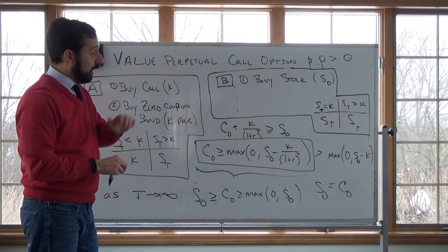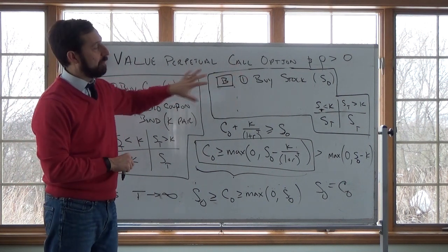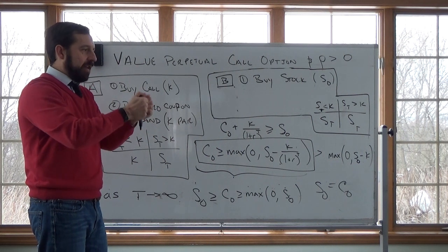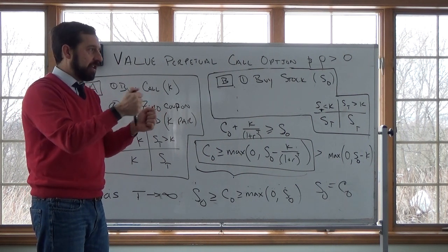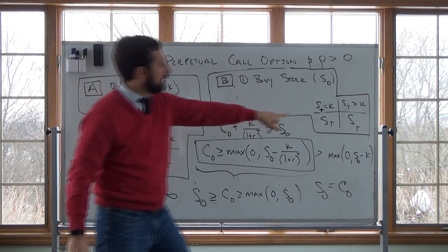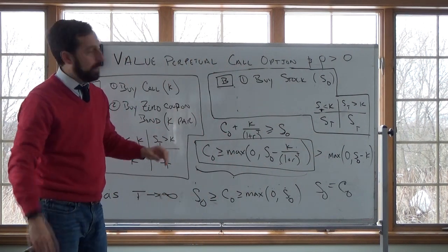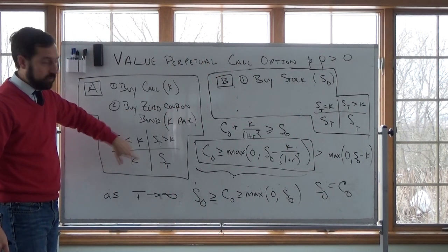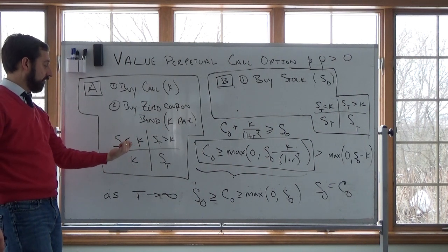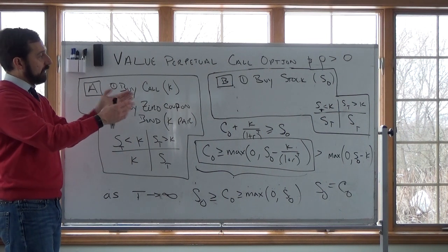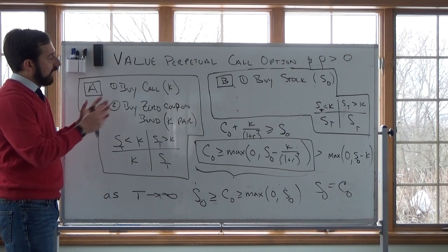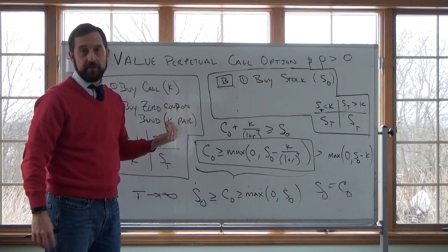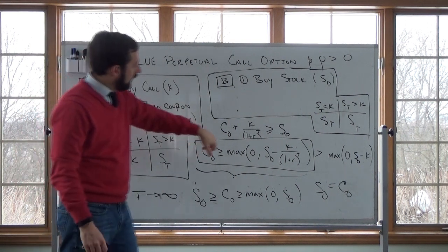The key here is that the payoff on Portfolio A dominates the payoff on Portfolio B, meaning it pays just as much or more in every state of the world. In the up state, if the stock price is greater than K, both portfolios pay S(T) — they pay the same. But in the down state, Portfolio B pays the stock price, whereas Portfolio A pays K, which is the face value of the bond and also the strike price, and notice that K is greater than S(T). So in the down state we prefer Portfolio A, and in the up state we're indifferent.